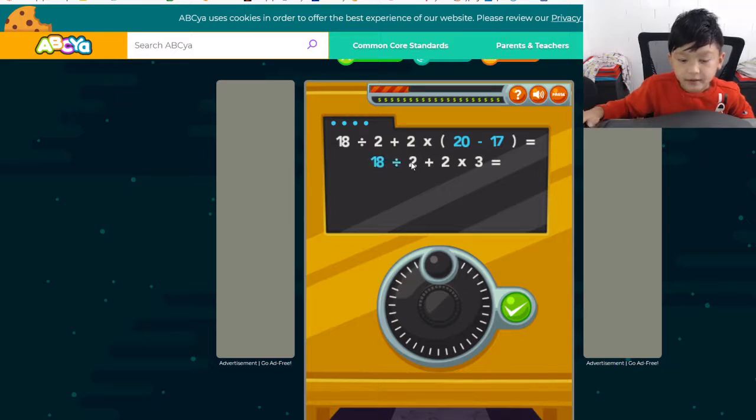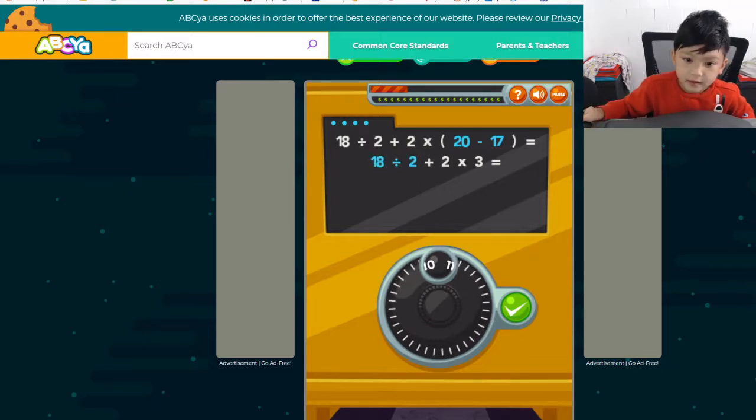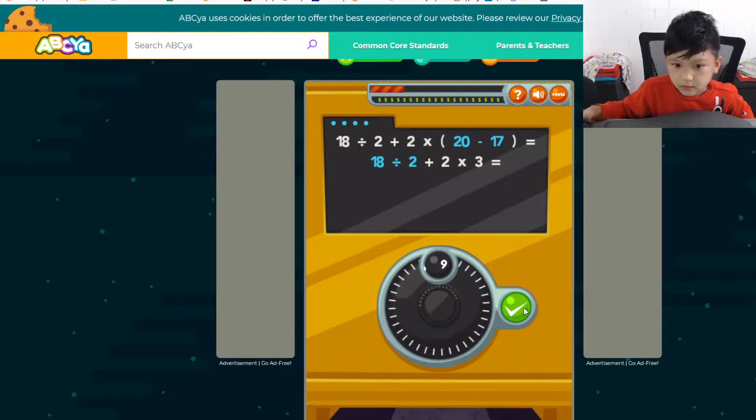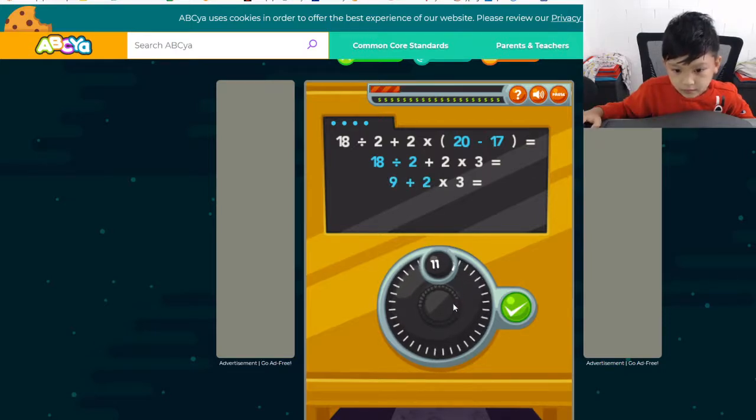Eighteen divided by two. Divide. This is like two groups. What's eighteen input into two groups? That's what it means. Plus two. Alright. Eleven times three.